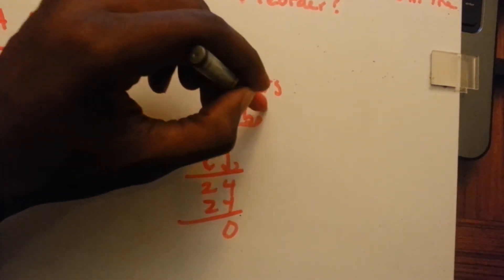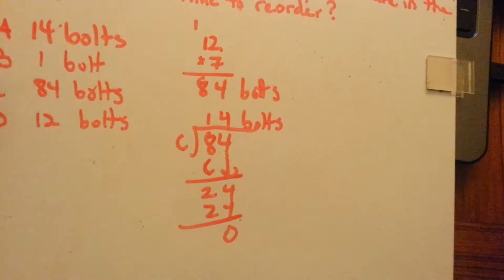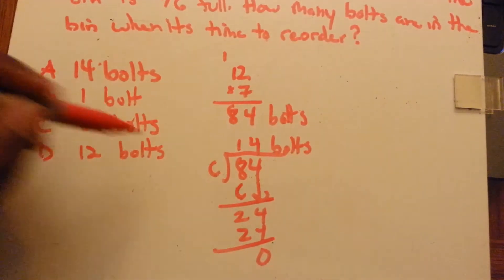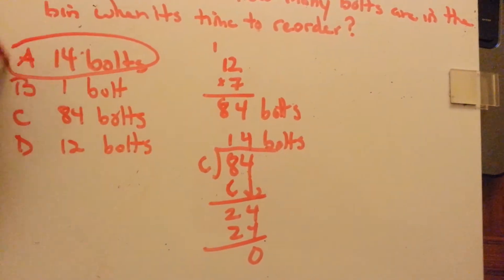So, there are fourteen bolts left when it's time to reorder. Fourteen is one-sixth of eighty-four. So, that would be answer A.